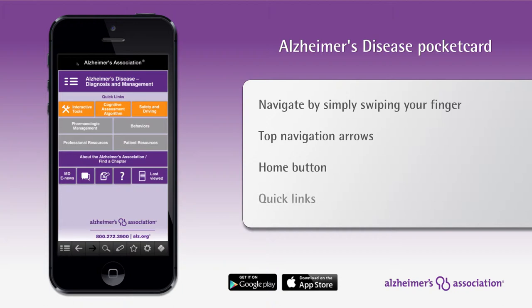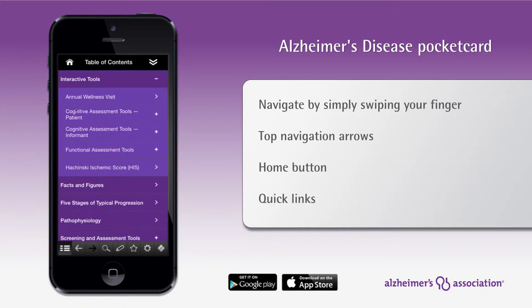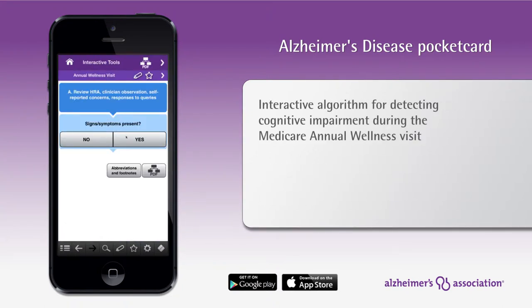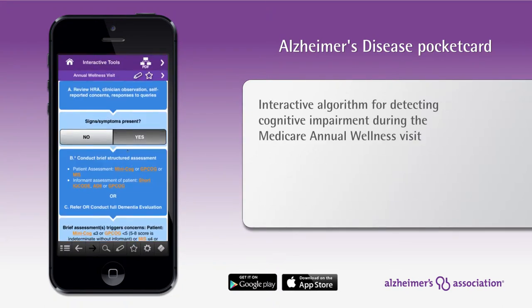A quick link to interactive tools is accessible from the home screen. For example, click on the annual wellness visit to find an interactive algorithm for detecting cognitive impairment.